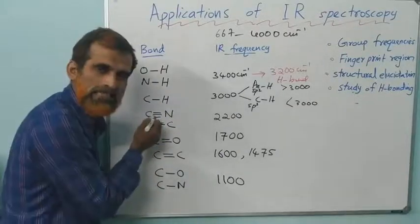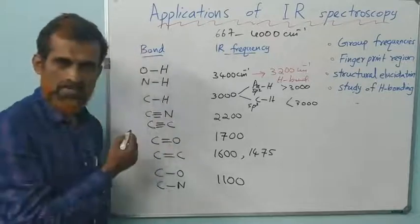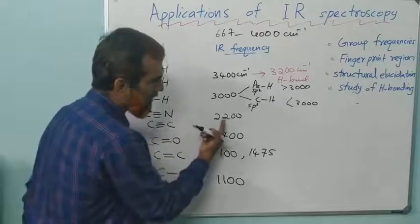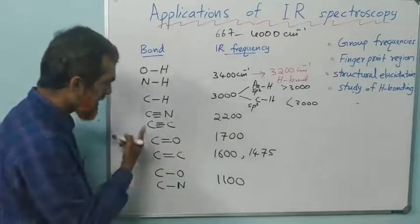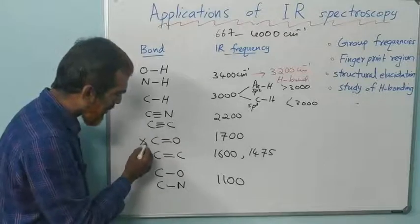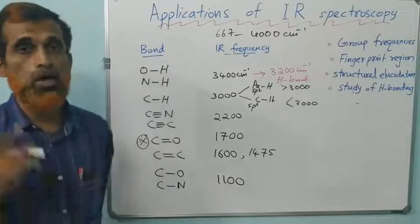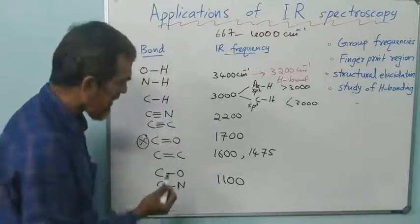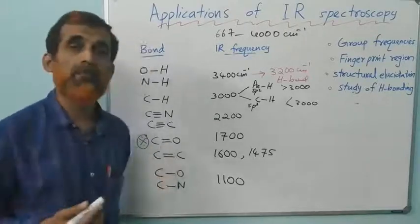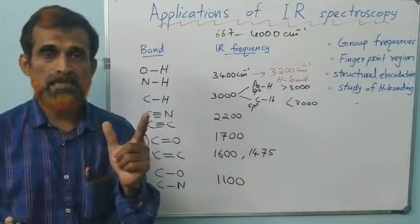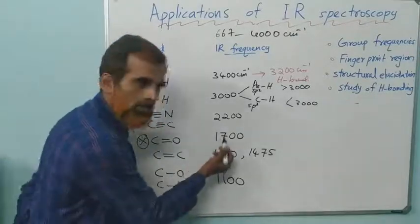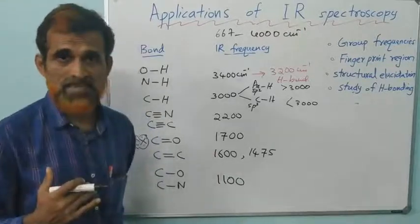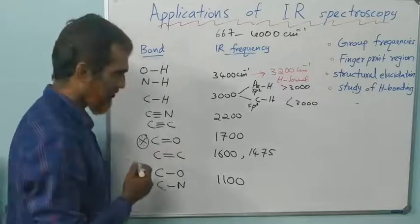After that comes C triple bond N and C triple bond C, which comes in alkynes and in nitrile or cyanide. This stretching frequency is around 2200. Then comes C double bond O. This is the most important and notable IR frequency because this is very intense peak you get in IR. Carbonyl group is very much in aldehydes, ketones, carboxylic acid and all the derivatives. The value comes around 1700. It can sometimes slightly increase or decrease depending upon the groups connected.